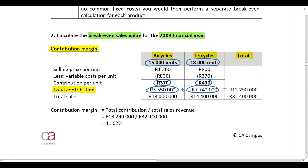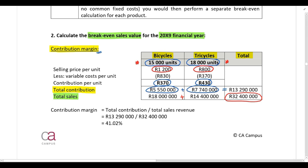Add those together to get total contribution. To get the contribution margin, take total contribution and divide by total sales. Calculate total sales by taking the selling price per unit and multiplying by the number of units for each product, then add them together to get total sales for Baxon Limited. Finally, calculate the contribution margin by dividing total contribution by total sales value.